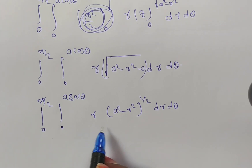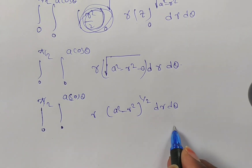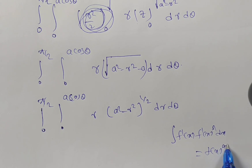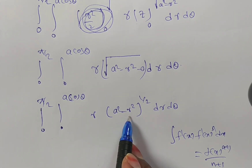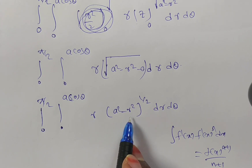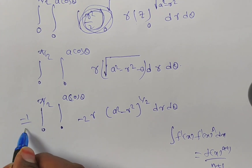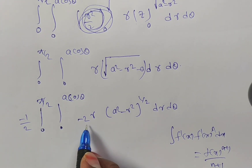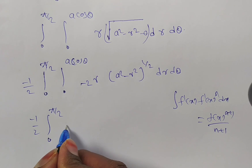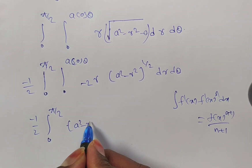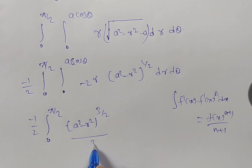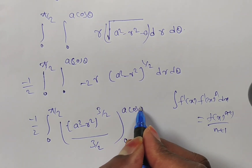Now it is a product of two functions. You can verify whether it fits the form f-dash of x times f of x to the power of n, in which case the integral equals f of x to the power of n plus 1, divided by n plus 1. The bracket is a square minus r square, and its derivative with respect to r is minus 2r. Since minus 2r is not present, multiply and divide by minus 2. Now the bracket derivative is beside, so we apply the formula.